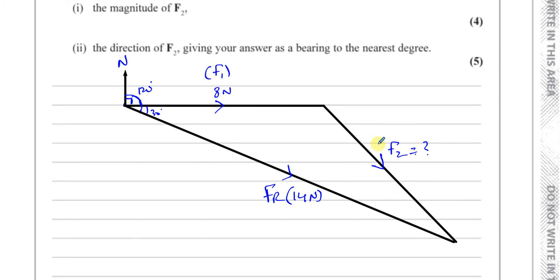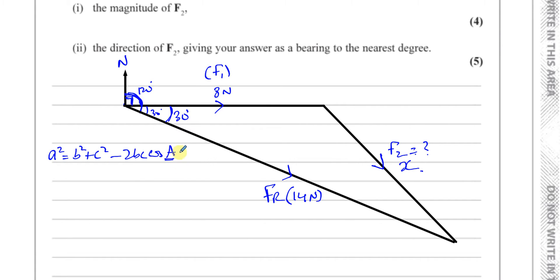We know from the diagram that this angle is 30 degrees, because the bearing of the resultant is 120, and F1 acts due east at 90 degrees, so 120 minus 90 is 30. One side of the triangle is 8 newtons, the side we want to find is X, and the resultant side is 14 newtons. We can use the cosine rule since we know two sides and the included angle. The cosine rule gives: X² = 8² + 14² − 2 × 8 × 14 × cos(30°).